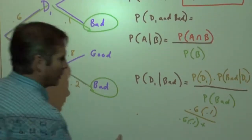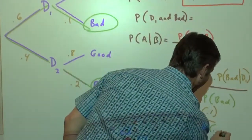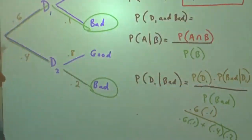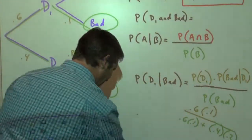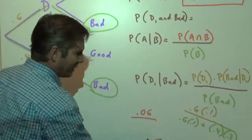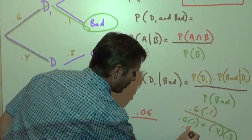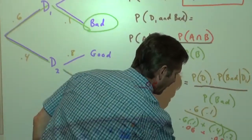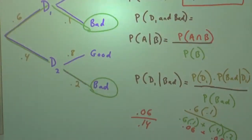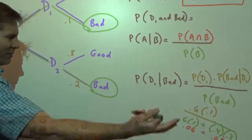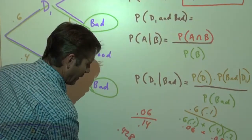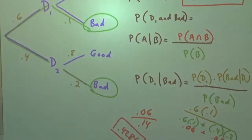The other way milk goes bad is it came from Dairy 2 — that's 40% of the milk — with a 20% chance of going bad. So our probability is 0.6 times 0.1, which is 0.06, divided by 0.06 plus 0.4 times 0.2, which is 0.08. Adding those together gives 0.14. So 0.06 over 0.14, which simplifies to 3 sevenths, approximately 0.4286.